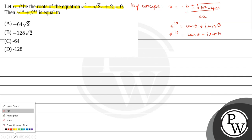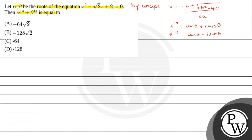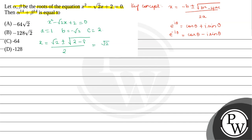Now let us use this and solve the question. The given quadratic equation is x squared minus root 2x plus 2 equals to 0. Here a equals to 1, b equals to minus root 2, c equals to 2. Then x equals to root 2 plus or minus root of b squared, that is 2 minus 4 into a into c, that is 4 into 1 into 2, that is 8, divided by 2. So it equals to root 2 plus or minus root 6i divided by 2.